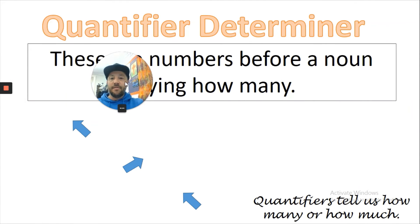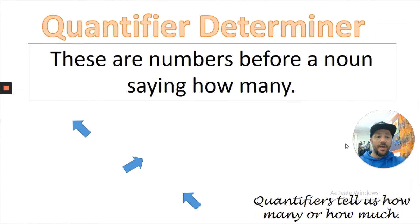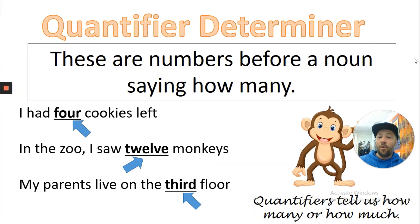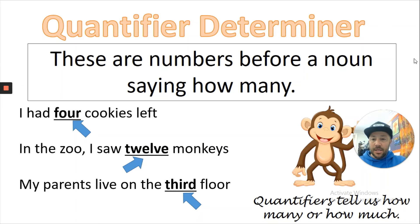Your next challenge: use 'my', 'your', 'his', 'her', 'its', and 'their' — each in a sentence under the heading 'possessive determiners' and underline them to help you remember when you revise. Moving on, next we have quantifier determiners. Quantifiers go before a noun and say how many or how much. For example: 'I had four cookies left', 'in the zoo I saw 12 monkeys', and 'my parents live on the third floor'.